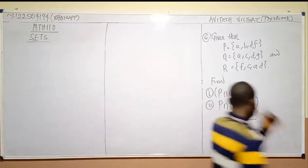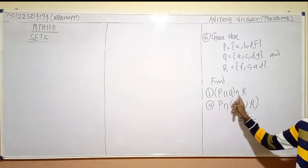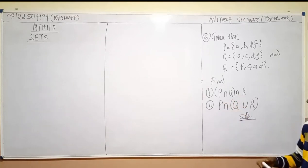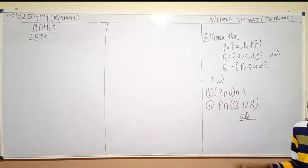For this question, I believe the first one is very simple. The reason is that the symbols are the same here. If the symbols are the same, what this simply means is P intersection Q intersection R. That's what this simply means.